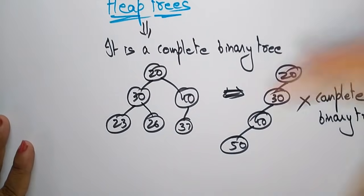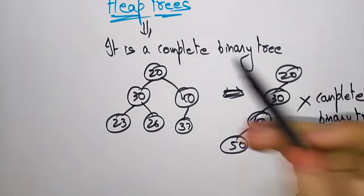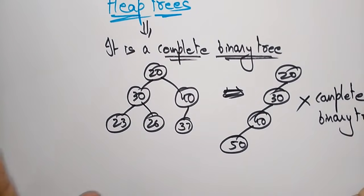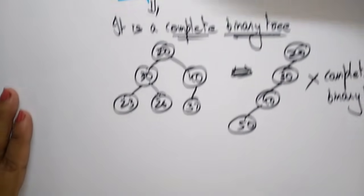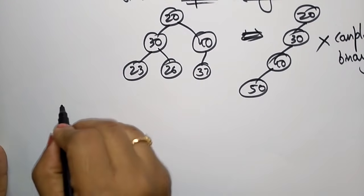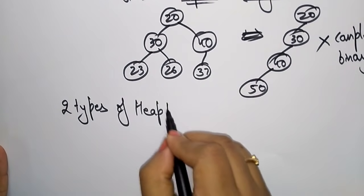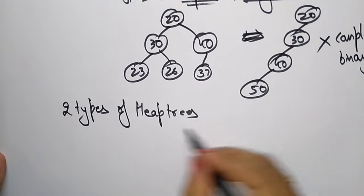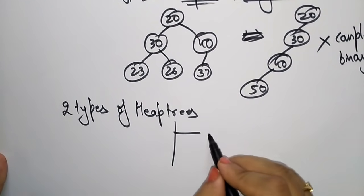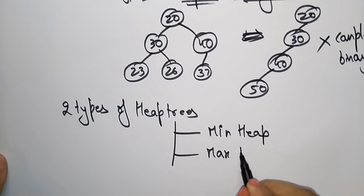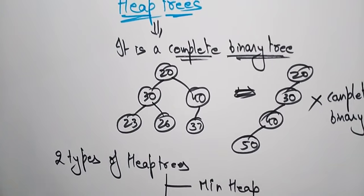Now coming to heap trees. Whatever tree you are constructing, you have to make sure that the tree is in the form of a complete binary tree. That condition you have to follow. When inserting elements into a heap tree, you have to check that the tree is a complete binary tree or not. There are two types of heap trees: min heap and max heap.